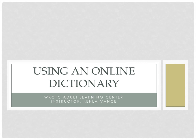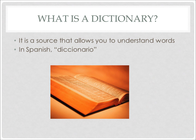Do you know what a dictionary is? In this part of the lesson, we are going to review using an online dictionary. The first thing that we need to know is what a dictionary is. A dictionary is a source, meaning a book, a website, or something else that allows you to understand words. For example, it may give you the definition of a word. In Spanish, you say diccionario.